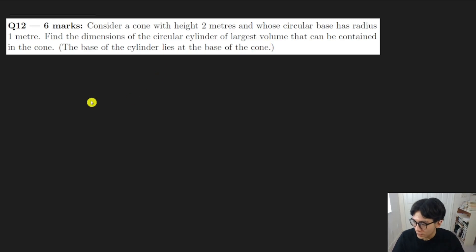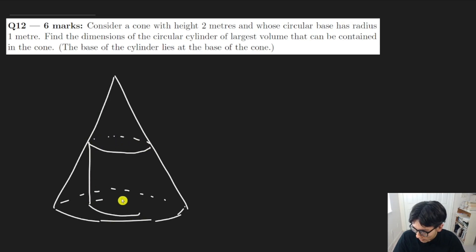The first thing is you need to draw it out. So here is our cone and our cylinder is inside the cone. Maybe I'll draw it like this, contained inside. And just the fact that they say circular cylinder, that just means that the cylinder has a circle at its base. So kind of the regular kind of cylinder that you're used to.